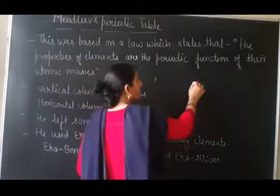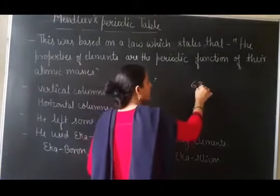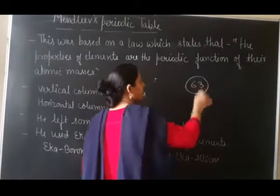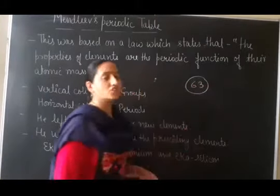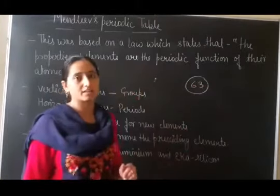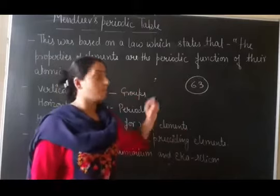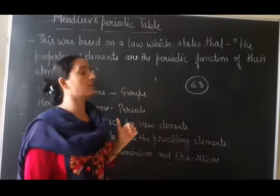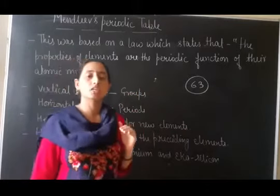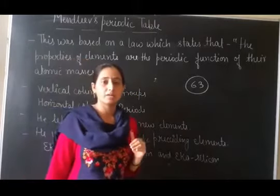At the time of Mendeleev, 63 elements were known and needed to be arranged. Mendeleev's periodic table is a very important table.